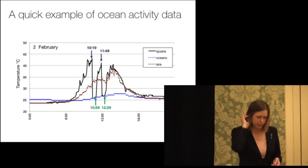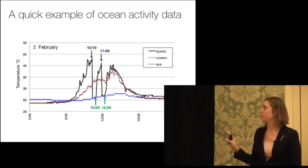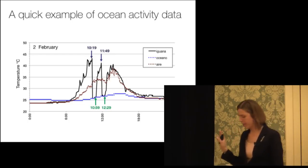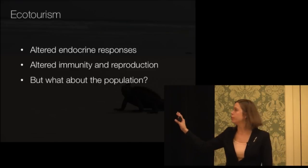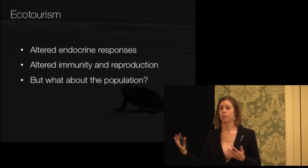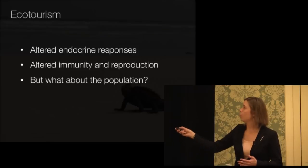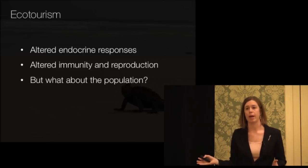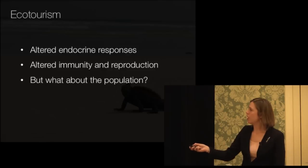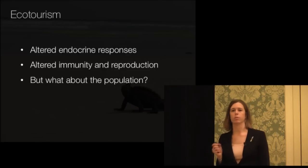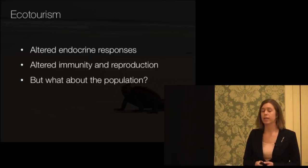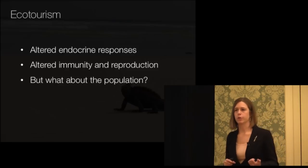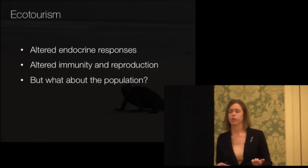So at least in this system, we know that there are altered endocrine responses in response to tourism. We know that we're getting a suppression of immunity and it seems to be a suppression of reproduction, which is worrisome — but these animals are long-lived and have multiple opportunities to breed in the future. What about the population though? Our ultimate goal is to take these variables and relate them back to population performance. And in a very long-lived animal like a marine iguana, this is going to take us many, many years. So we're going to travel back to Utah, a little bit closer to home, to ask this question more quickly.